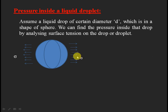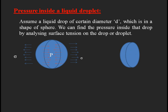The reason the drop doesn't deform is that certain opposite forces compensate for the surface tension forces. These opposite forces are due to the pressure acting inside the droplet. By applying the equilibrium condition between the surface tension force and the pressure force at the middle cross-sectional view, we can find the pressure inside the droplet.